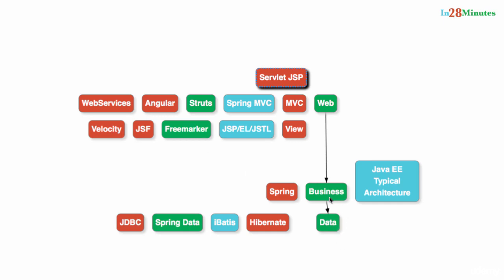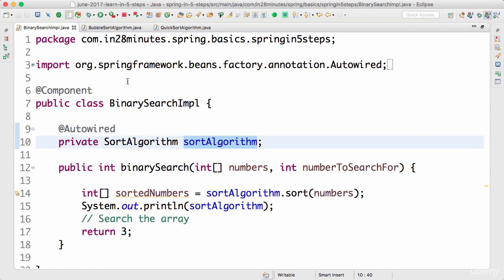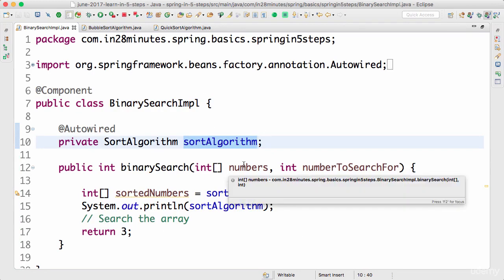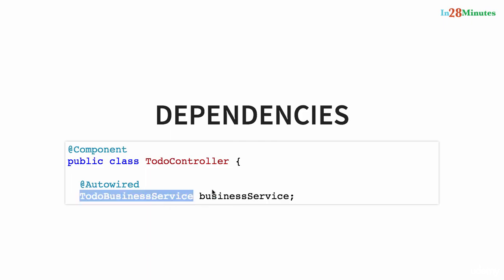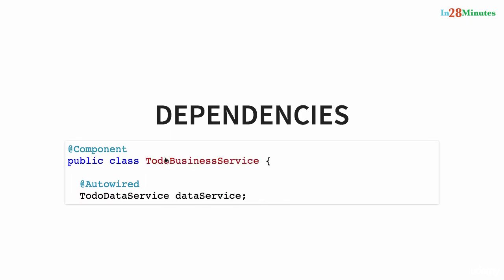In a typical architecture, there are many dependencies: the data layer is a dependency for the business layer, and the business layer is a dependency for the web layer. The @Autowired concept is very frequently used in enterprise applications, which are full of dependencies. Let's look at three more examples. Here we have a TodoController making use of a TodoBusinessService to render to-do screens and get all the details — so TodoBusinessService is a dependency of TodoController.